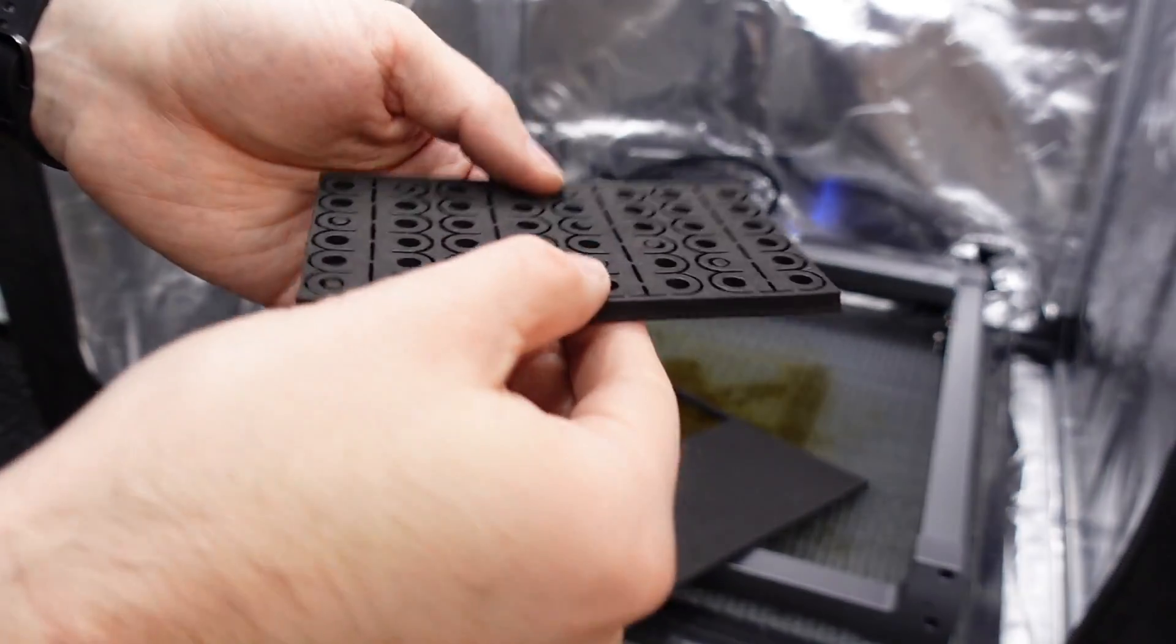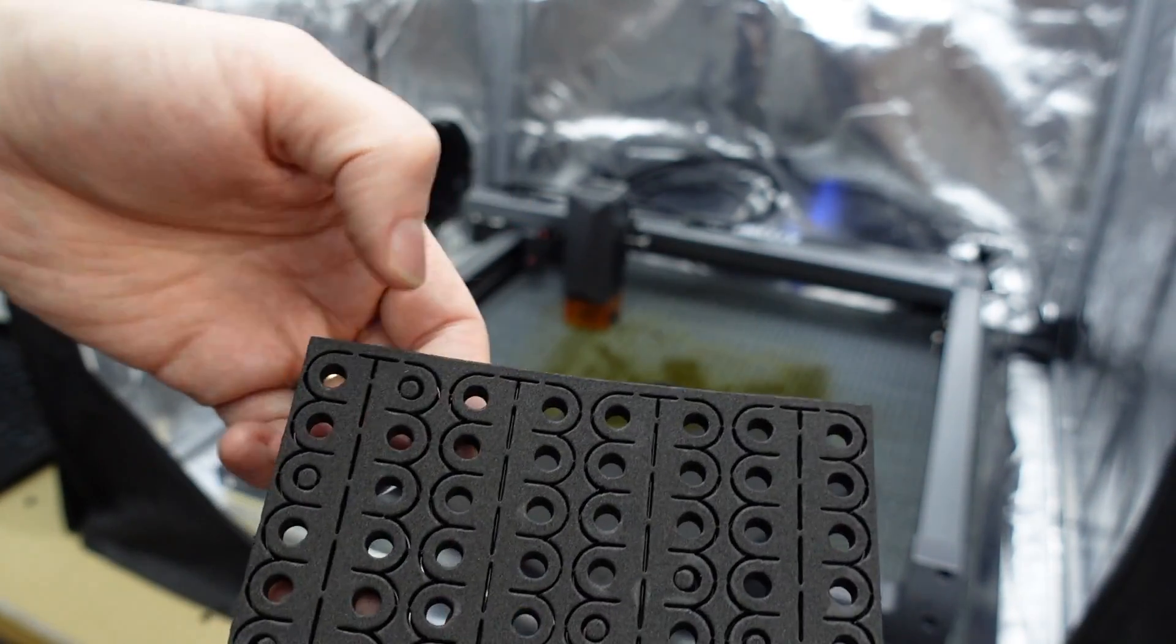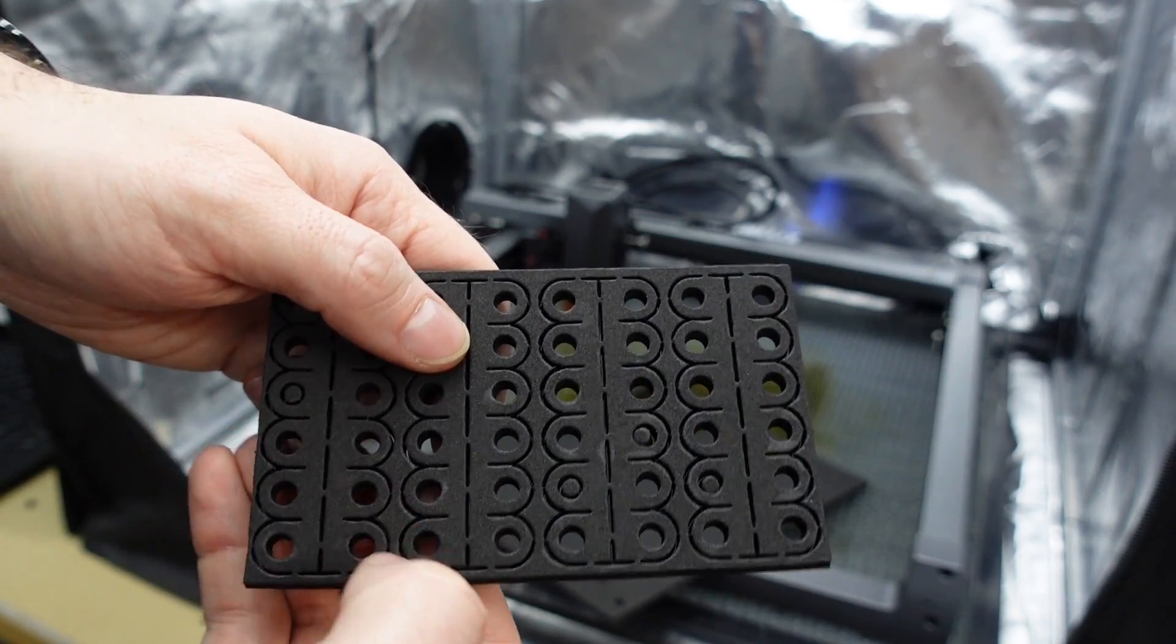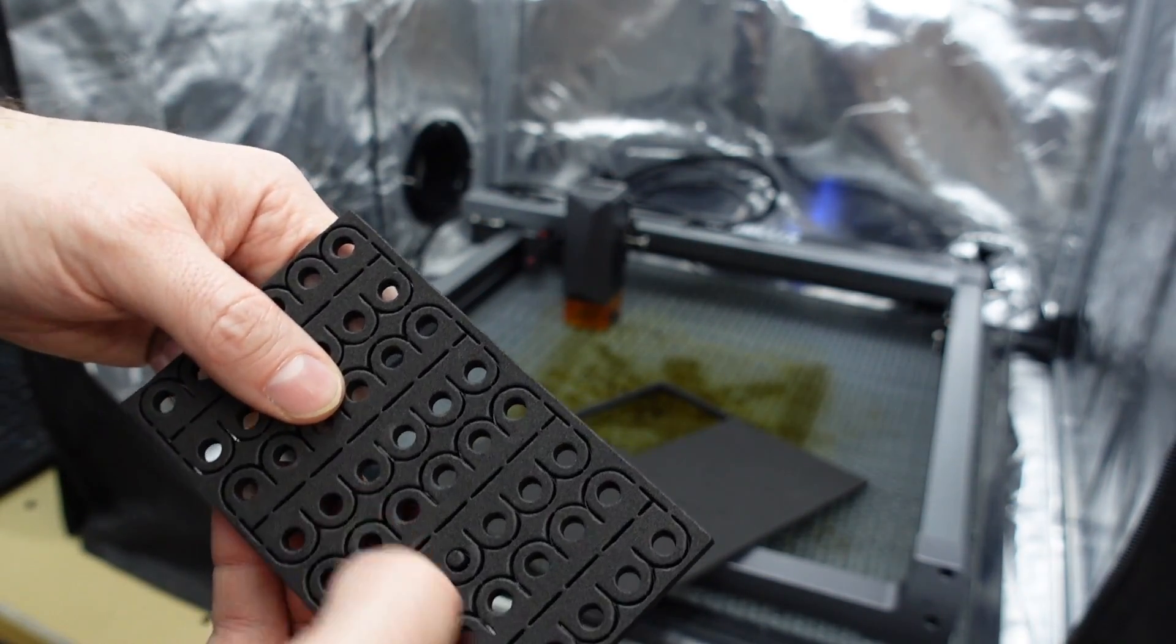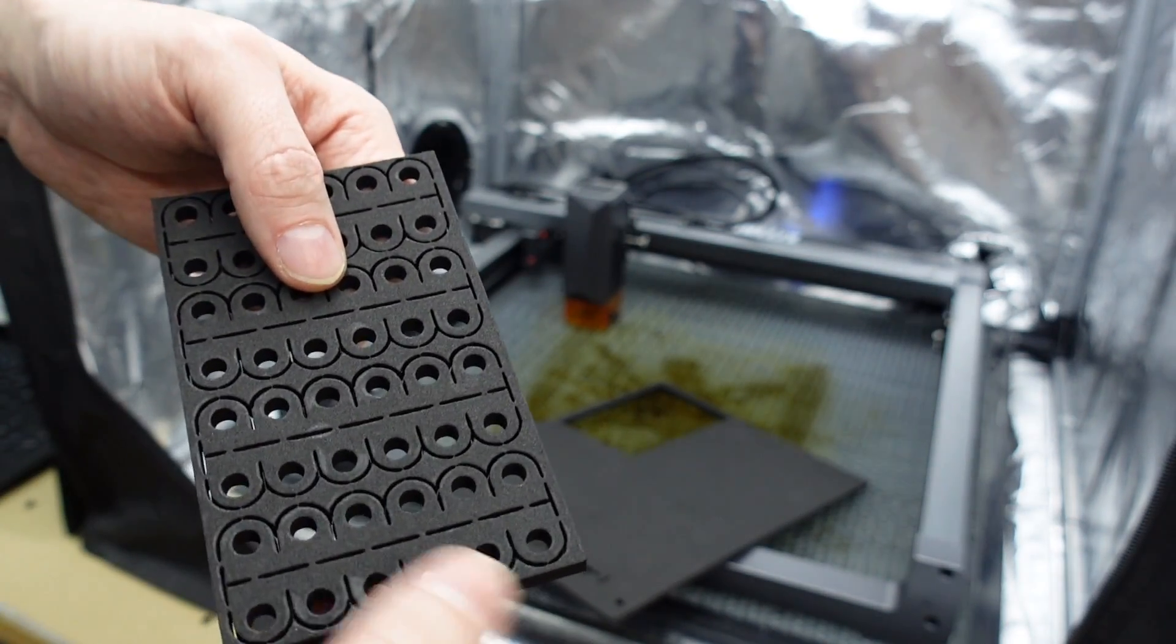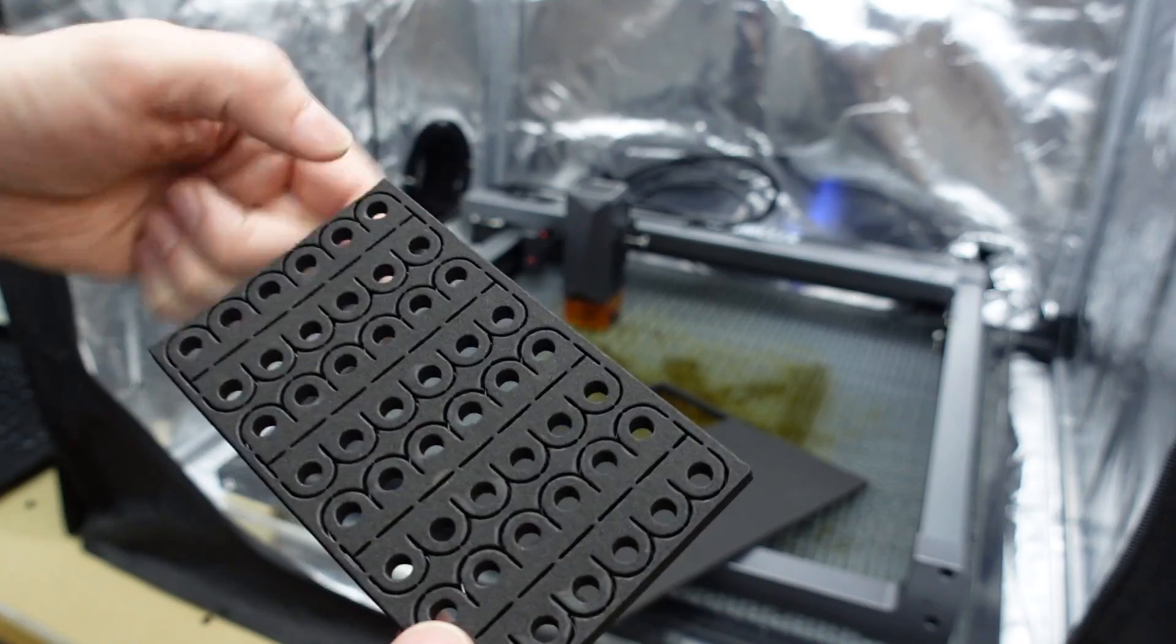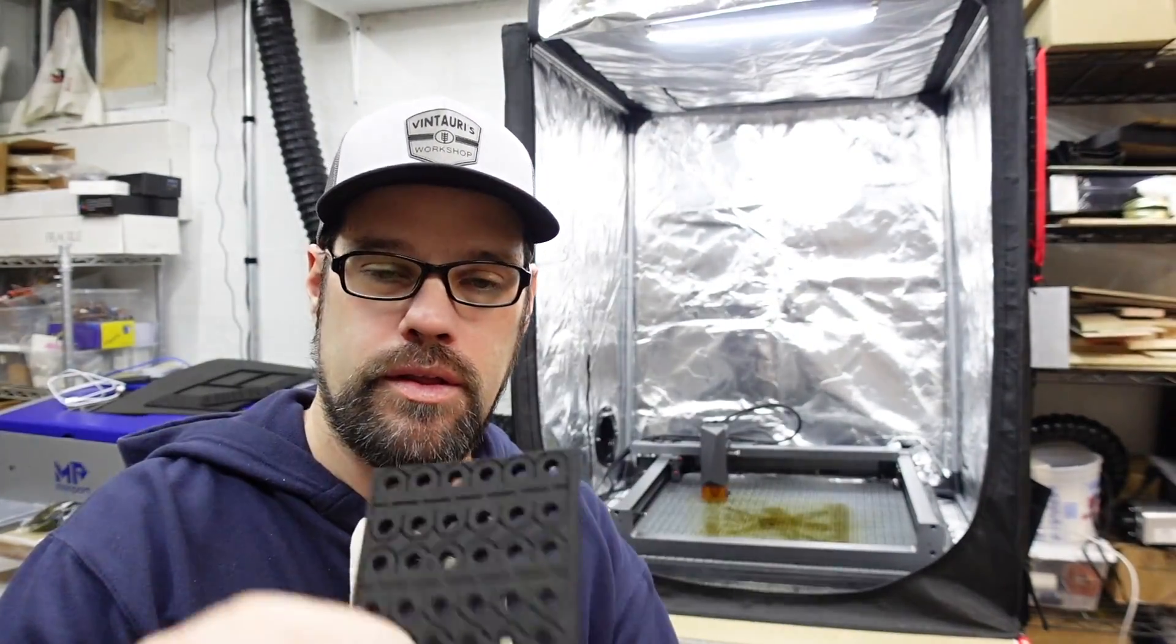Alright, so we pulled this out and some of these circles are just holding on, but you just press them and they pop right out. So I would call that very successful. Now it's not as fast as my big 60 watt CO2, but I don't have to run out to the shop and fire everything up just to get this done. So I was able to cut out the three of these that I needed and it worked pretty well.